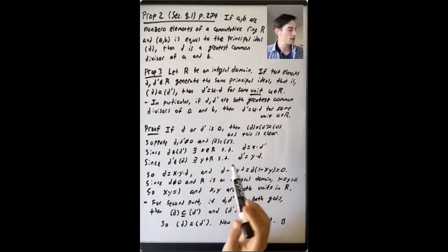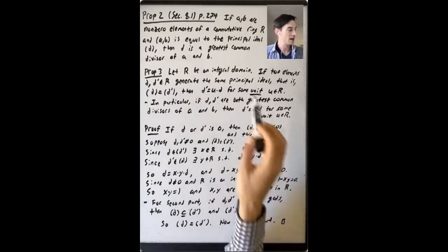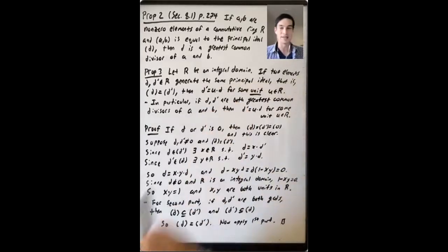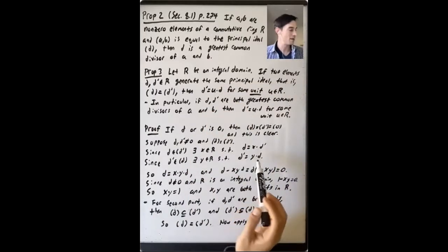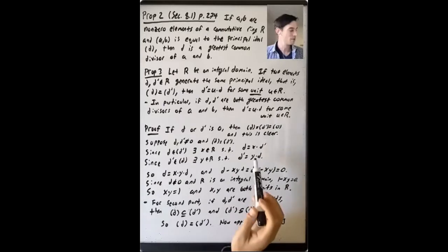What's the point of this? We want to say that D' is equal to a unit times D. And we know that D' is equal to Y times D. So we want Y to be a unit.